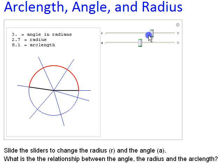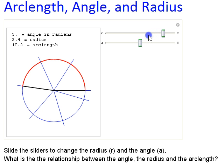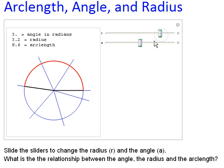Change the radius. 3 times 3 is 9. It looks like the arc length is always the radius times the angle.